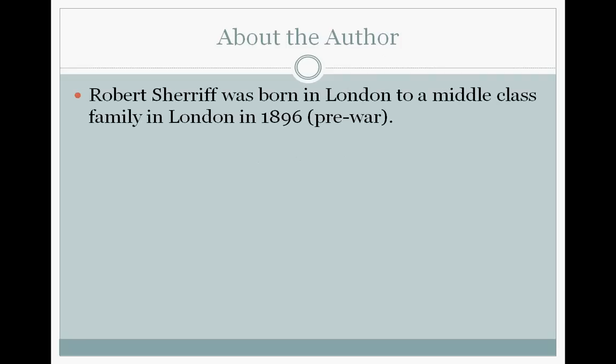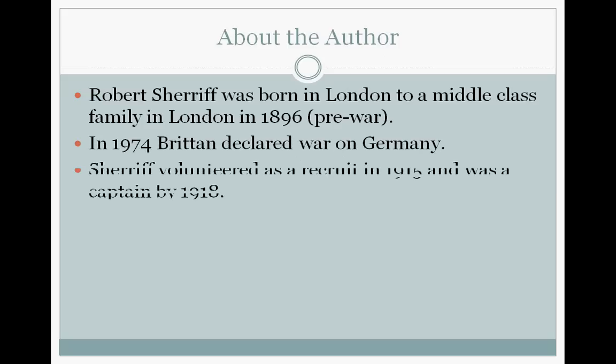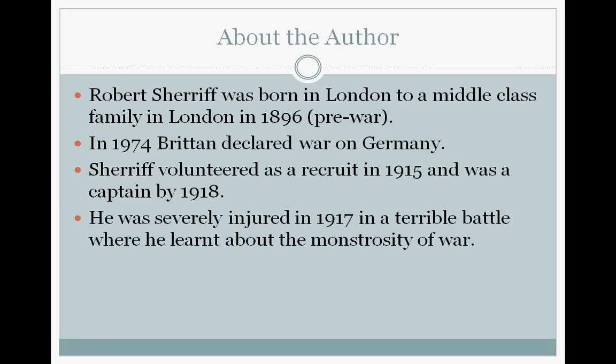Sherriff wrote Journey's End in 1928, ten years after the end of World War One. Robert Sherriff was born in 1896 to a middle-class family who lived in a village close to London. He went to Kingston Grammar School and in 1914 left and began to work as an insurance clerk. On August 12th that same year, Britain declared war on Germany and the First World War began. In 1915 Sherriff volunteered as a new recruit and by 1918 he had risen to the rank of captain. He almost died, however, in 1917 and was severely injured in a terrible battle in southern Belgium. He spent over a month in hospital before returning to the front once more.